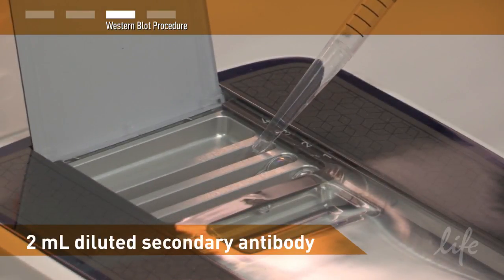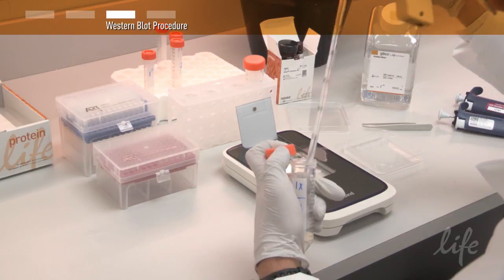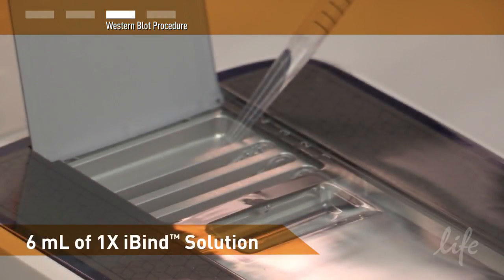Next load 2 milliliters of the diluted secondary antibody into well 3. And finally load 6 milliliters of the 1X iBind solution into well 4.